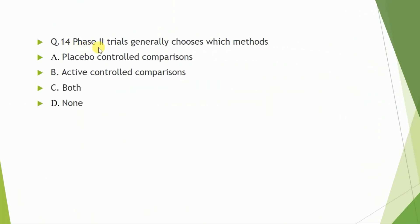Question number fourteen: phase two trial generally chooses which method? Options are A) placebo control comparison, B) active control comparison, C) both of these, D) none of these. The correct answer is both of these.